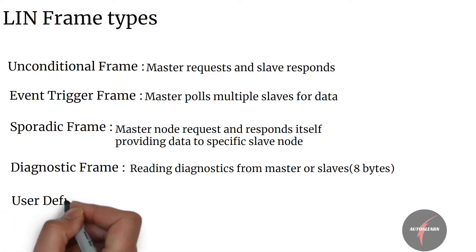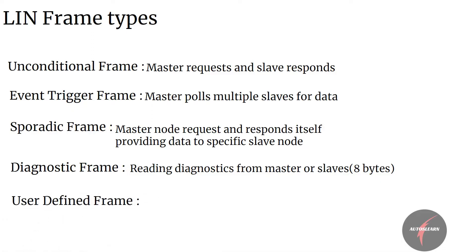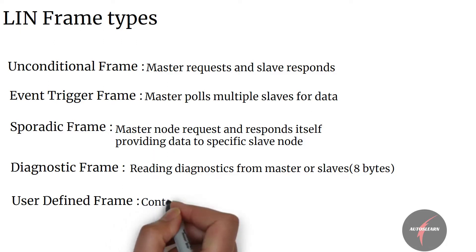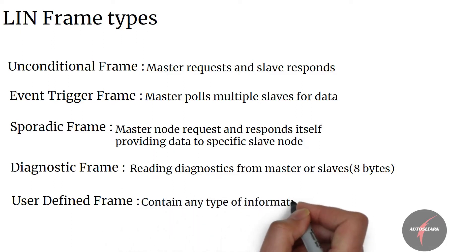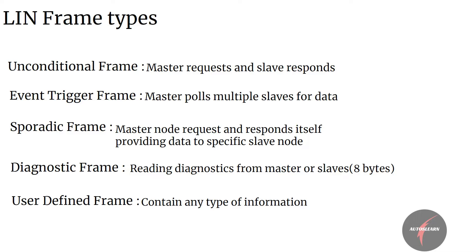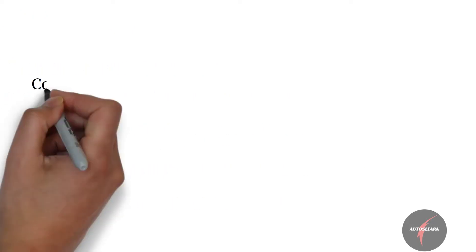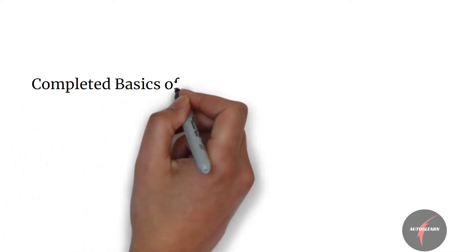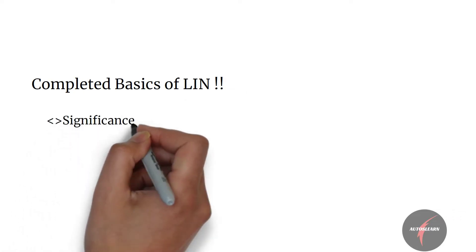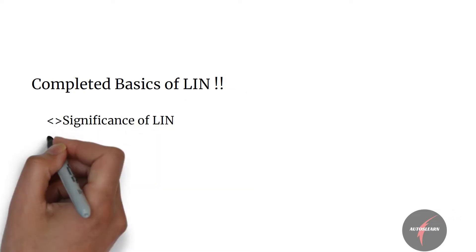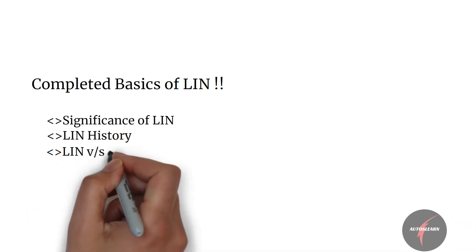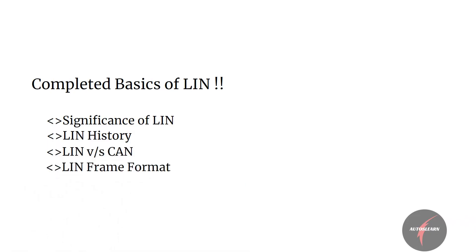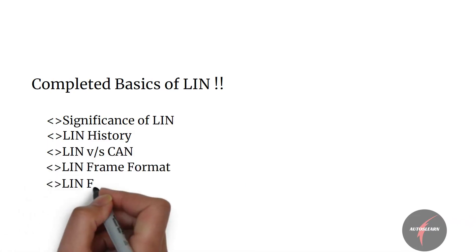A user-defined frame may contain any type of information, and specifically identifier 62 is used for this frame type. So with this we have covered the basics of LIN, including the significance of LIN, LIN history, LIN vs CAN comparison, LIN frame format, and lastly LIN frame types.